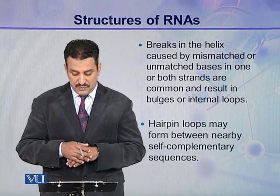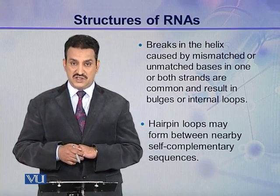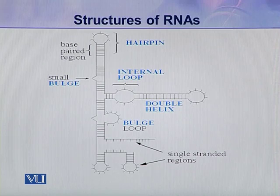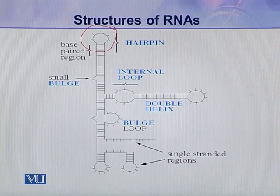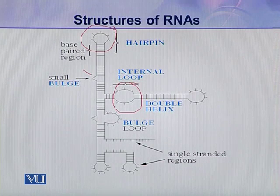Another type of loop, called a hairpin loop, may form between nearby self-complementary sequences. This can be seen clearly in the illustration, which shows a number of secondary structures assumed by ribonucleic acids. Here you can see a hairpin loop and an internal loop. There is also a small bulge where only one or two bases are not complementary to each other.